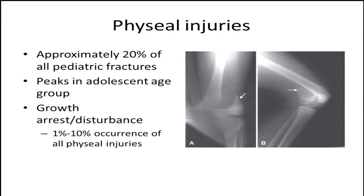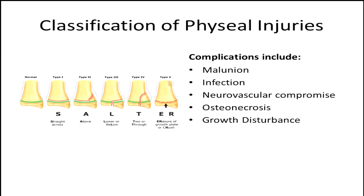Physis injury is something all of us in this room are acutely aware of — it's what makes these patients different from adult counterparts. Twenty percent of pediatric fractures are associated with the physis, peaking in the adolescent age group, typically children between 8 and 14. However, the incidence of growth arrest and growth disturbance is not as common — reports show anywhere from 1 to 10 percent, which is lower than I would have initially thought. All of us should be familiar with the Salter-Harris classification. I left this slide for the residents — there's a mnemonic: Salter-Harris 1 is straight across, 2 is above, 3 is below, 4 is through, and 5 is obviously the crush of the growth plate.